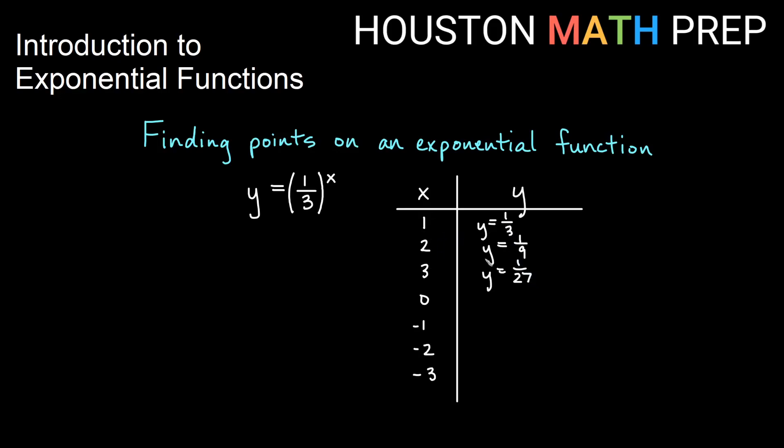So you can sort of see what's happening here. When we plug in positive numbers for x in the exponent, when we have a fraction in the base, we're actually getting smaller and smaller numbers. Plugging in 0, we're going to get a similar thing we did before. We have something to the 0. 1 third to the 0 is just going to be 1 by properties of exponents.